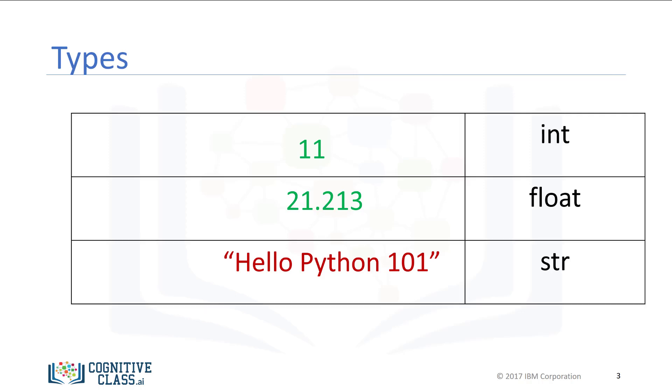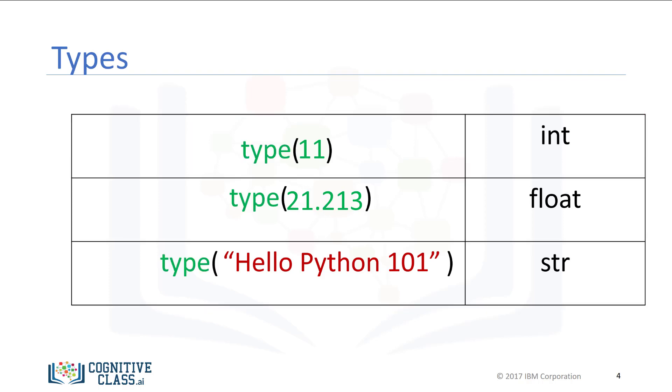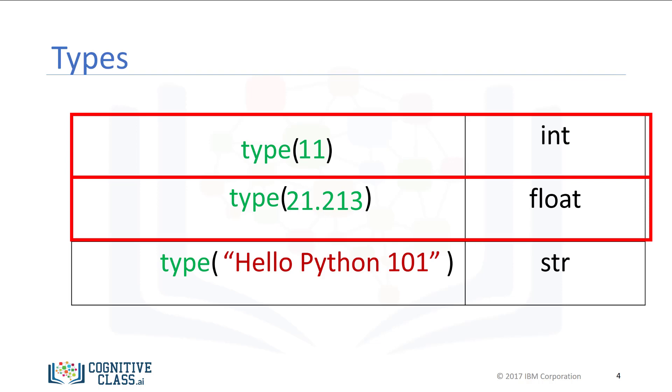The following chart summarizes three data types for the last examples. The first column indicates the expression. The second column indicates the data type. We can see the actual data type in Python by using the type command. We can have int, which stands for an integer, and float, that stands for float, essentially a real number. The type string is a sequence of characters.